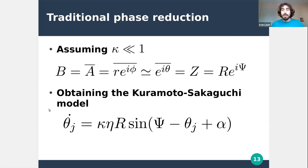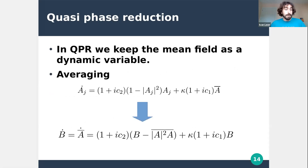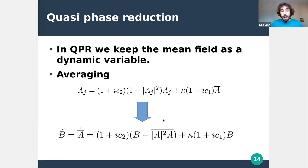It is well known that the phase reduction of the mean-field Stuart-Landau equation gives the Kuramoto-Sakaguchi model, which successfully describes the transition from incoherent to synchronous states. However, it cannot describe non-uniform incoherent states or quasi-periodic partial synchrony present in the mean-field equation. That is why we extend to quasi-phase reduction: instead of approximating the mean field b, we give b its own dynamics by averaging the oscillator equation.